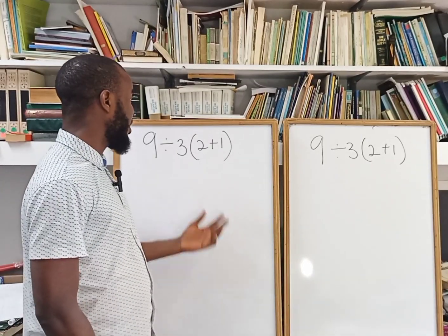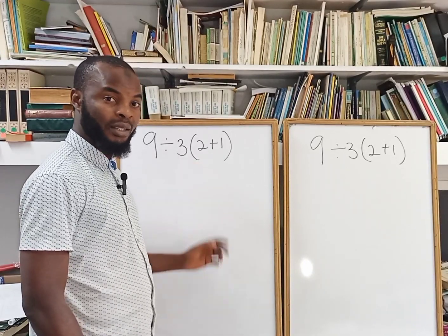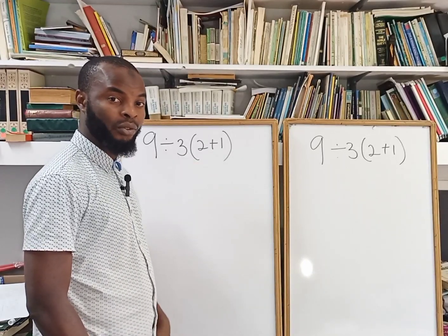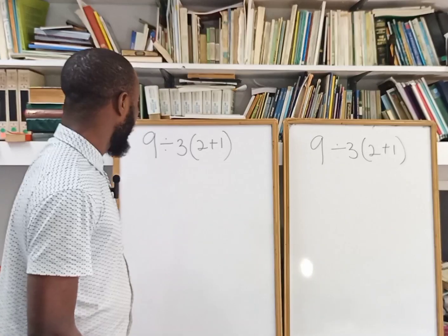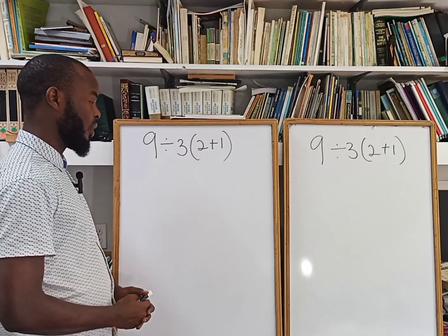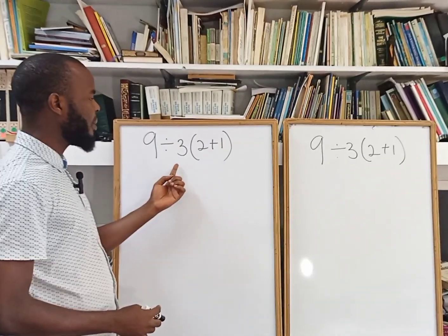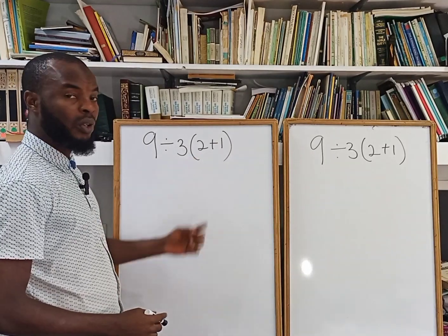Today we want to find a solution to this problem. This problem has been causing issues on the internet over a very long time. So using the approach of BODMAS, or you can call it PEMDAS, either way, we have 9 divided by 3 into bracket 2 plus 1, method 1.